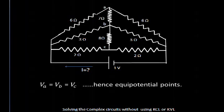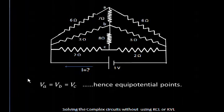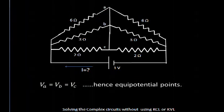Current always flows from a point of higher potential to a point of lower potential. When the points have equal potential — they are equipotential points — current is not going to flow. This situation is very helpful because when current is not flowing from A to B or from B to C, we can consider these points either as short or open. We have shorted them, so the resistance between A-B and B-C holds no importance and has been removed.